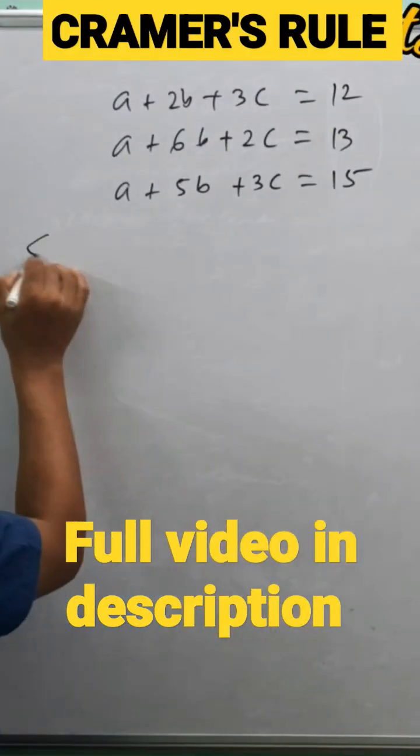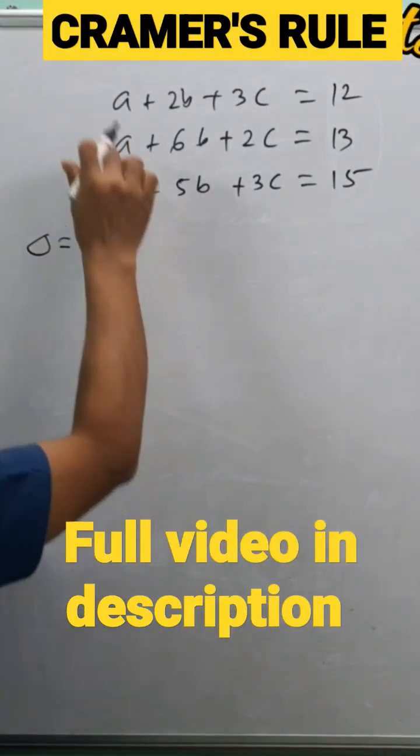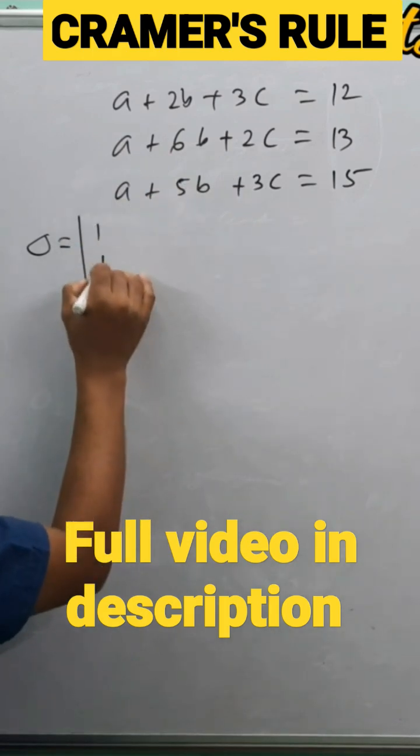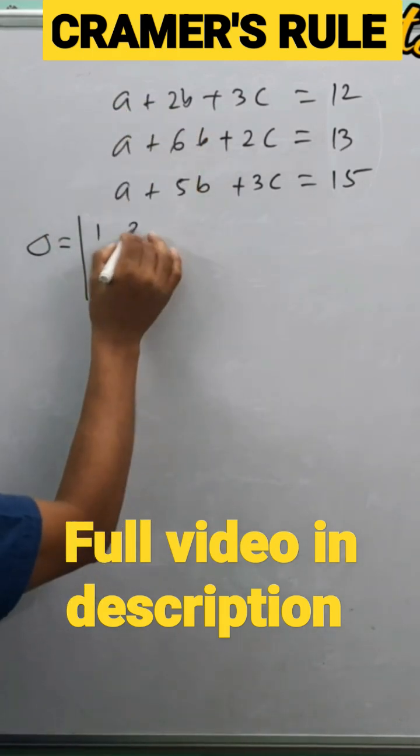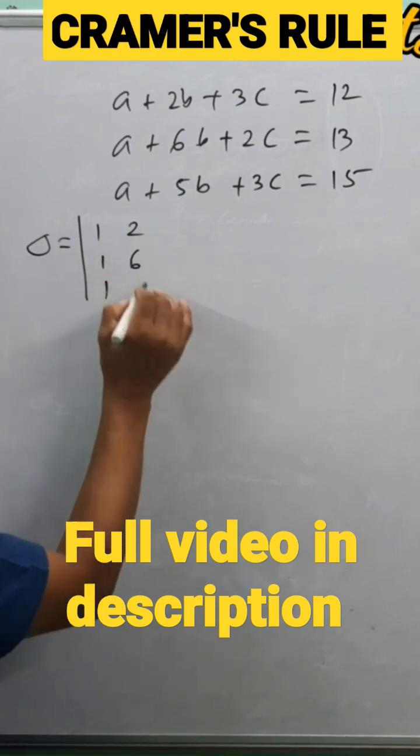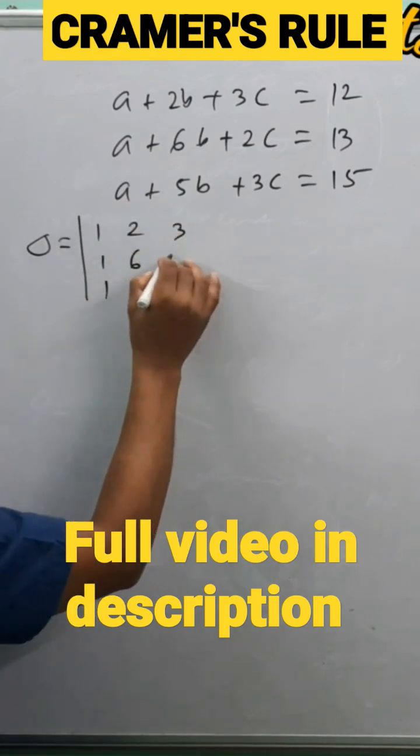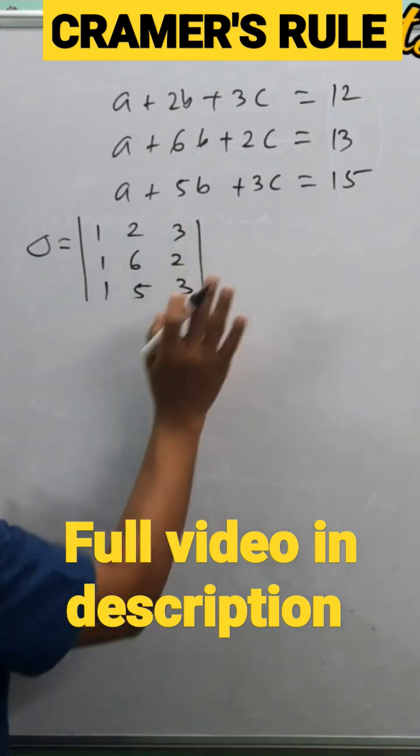Now let's see, what is delta? Delta is actually the coefficients of a, b, c. The first column: one, one, one - coefficient of a, nothing means one. The second column: two, six, five. The third column: three, two, three.